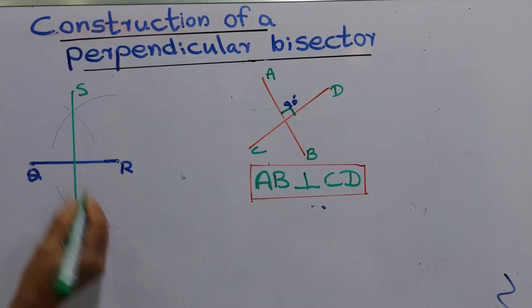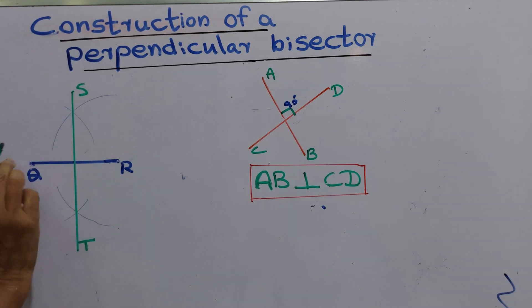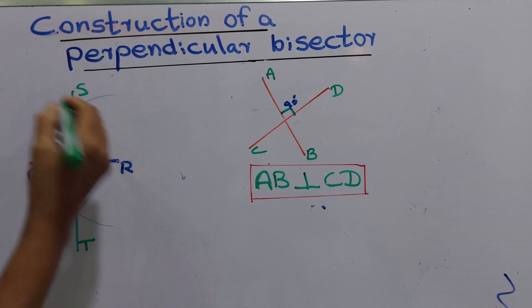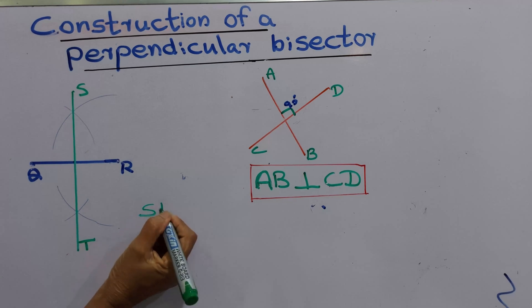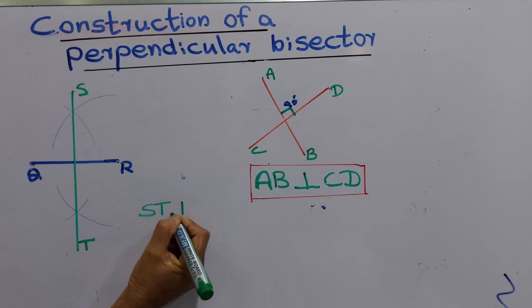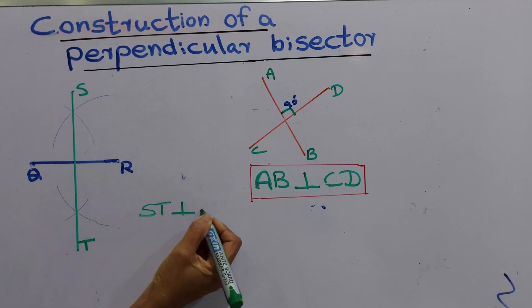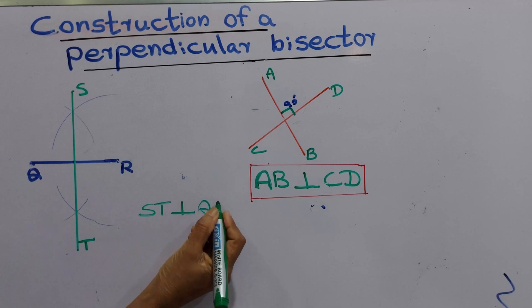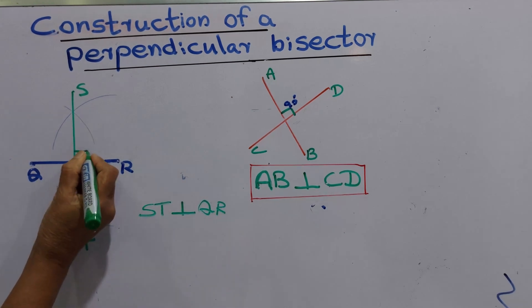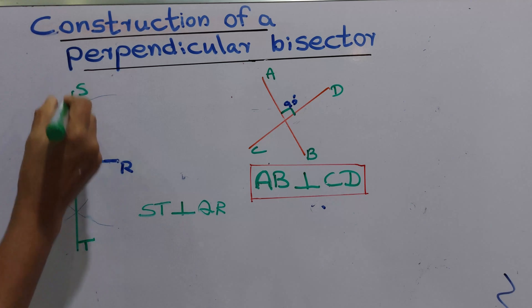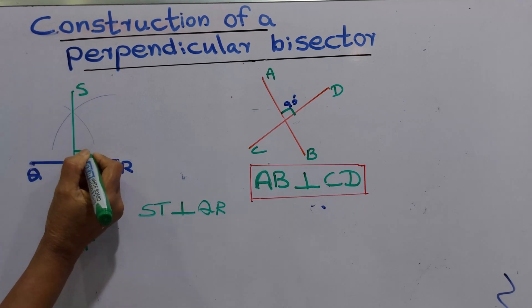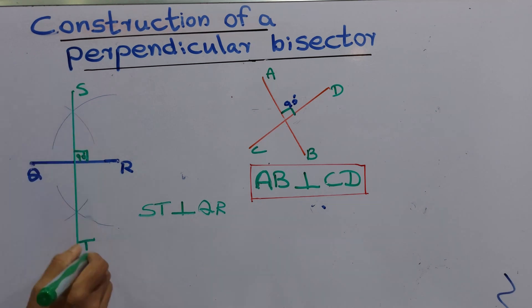This line ST is perpendicular to QR. We can write ST perpendicular to QR. That means there is a right angle here, that is 90 degrees. This is the perpendicular bisector.